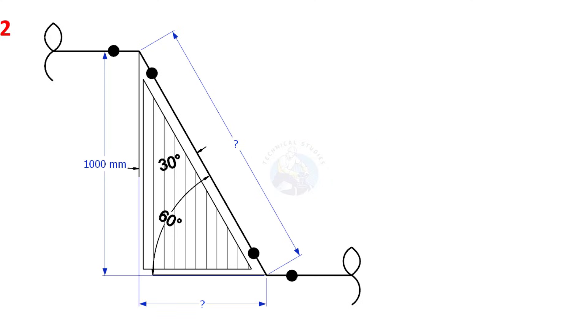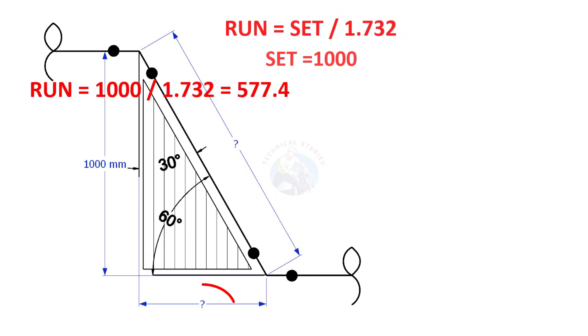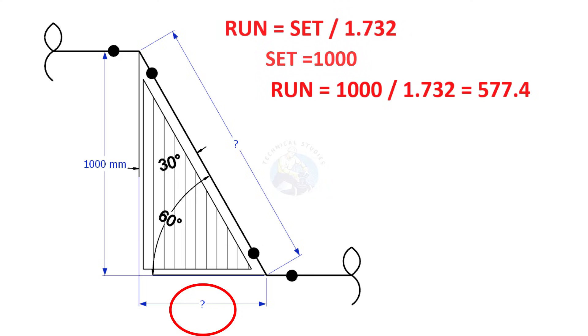In a similar manner, if the set is given and to find the run, divide the set by 1.732. Assume that the value of the set is 1,000. To get the value of the run, divide 1,000 by 1.732. The answer is 577.4.